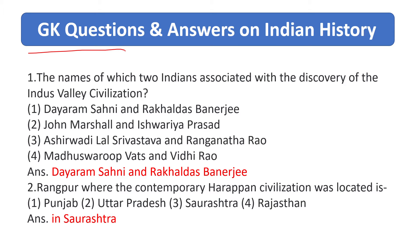GK questions and answers on Indian history. The names of the two Indians associated with the discovery of Indus Valley civilization: the right answer is Daya Ram Sahani and Rakhladas Banerjee.